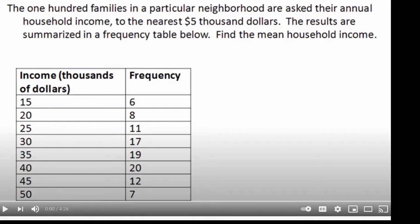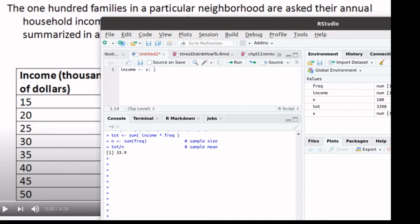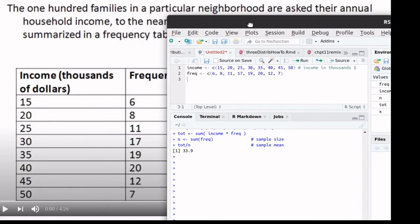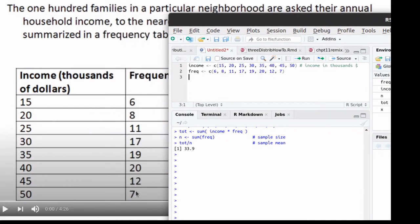We can capture that data in R. Let's begin by constructing a vector called income, and that will contain this first column. We can create a column for the frequencies that those occurred at. Those that earned $15,000, there were six of them. There were eight of them that earned $20,000, and so on. So what we're doing there is looking at this frequency column.